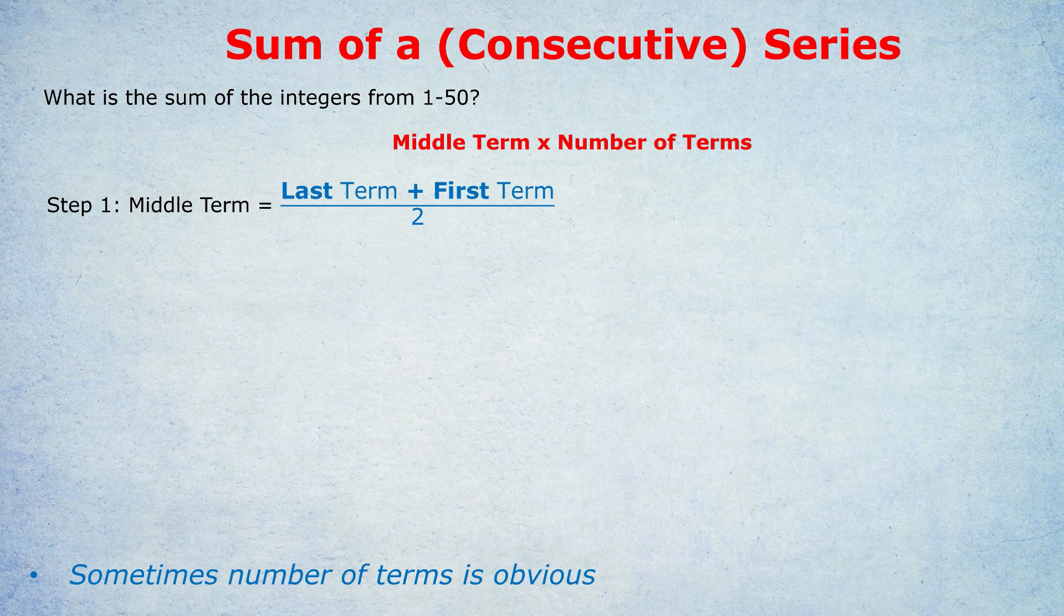So that would be a good question if you ask that. 25.5 obviously isn't in this list, but it's our middle term regardless. So last term plus first term divided by 2. That's how you find the middle term. It's always the same formula. I put it in blue. How do we find though the number of terms? And that is where things get tricky.